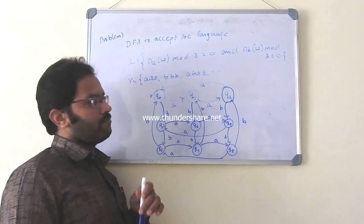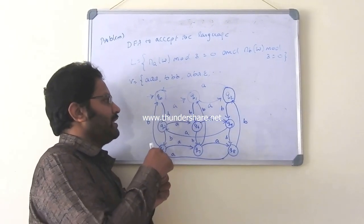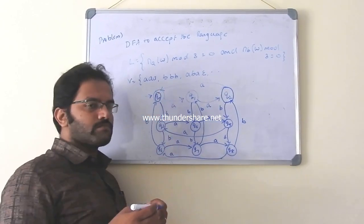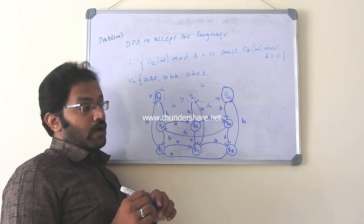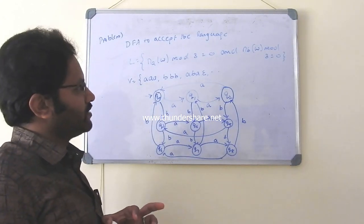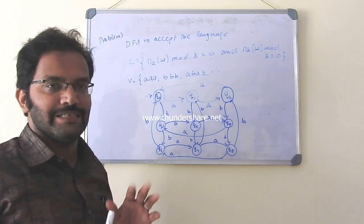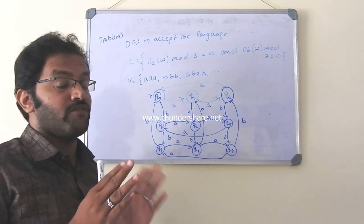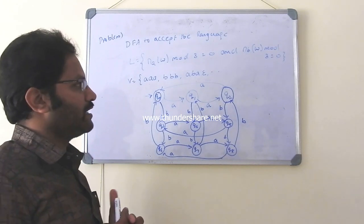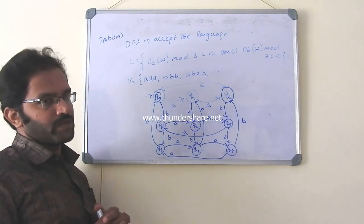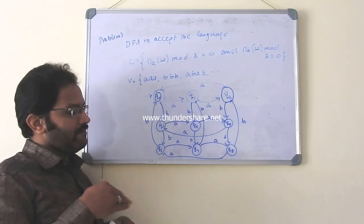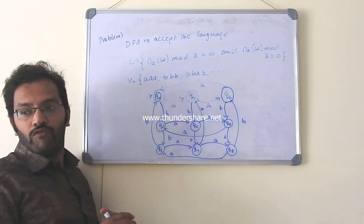Again, the string is AAA or BBB. So when you accept three A's, I come back to Q naught. So make Q naught as final state. So now, this is a DFA. We should accept the strings where number of symbols in DFA or the number of symbols in string W divided by 3 and number of symbols in W divided by 3. So like this, you may have several such problems to be solved.